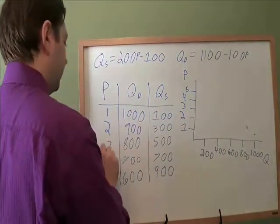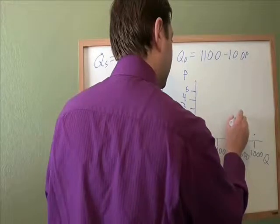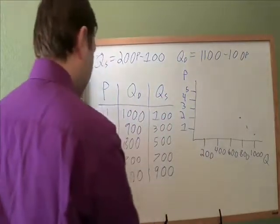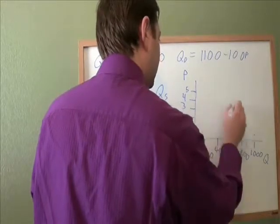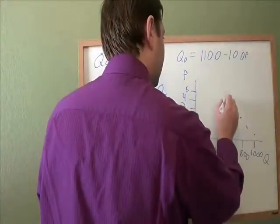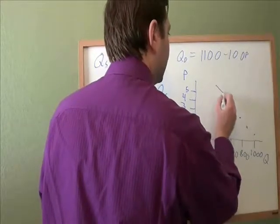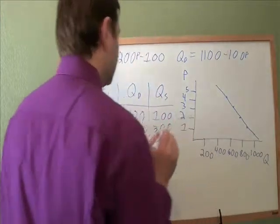And keep going like that. $3 and $800. About there. $4 and $700. About there. $5 and $600. About there. And that is the demand line.